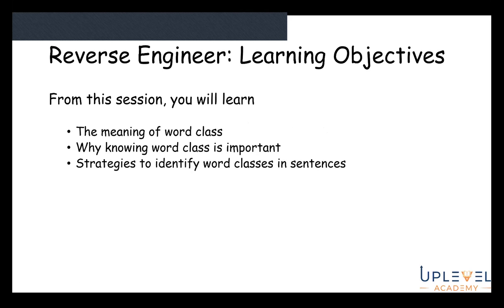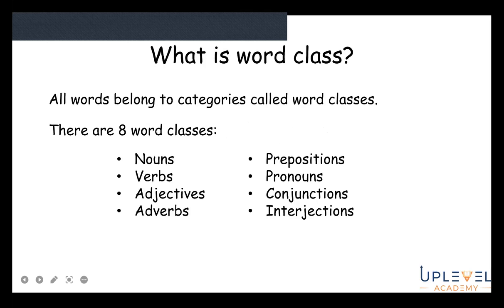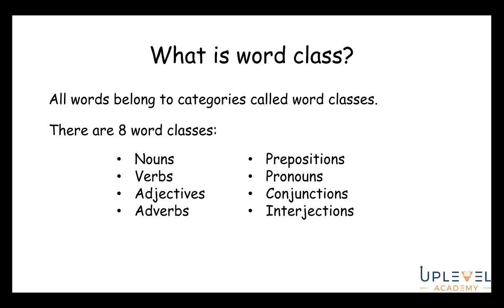All words belong to categories called word classes. There are eight word classes in English: nouns, verbs, adjectives, adverbs, prepositions, pronouns, conjunctions, and interjections. It's vital that we know the meaning of these because it helps us to ensure we're using each word correctly. Words within a class will have similar behaviors, characteristics, or forms.